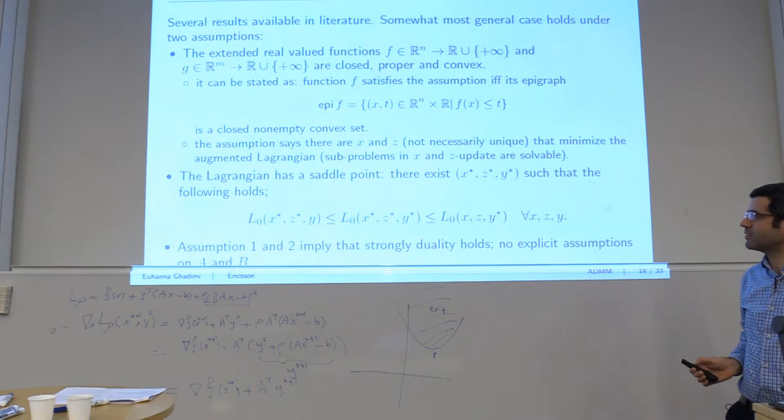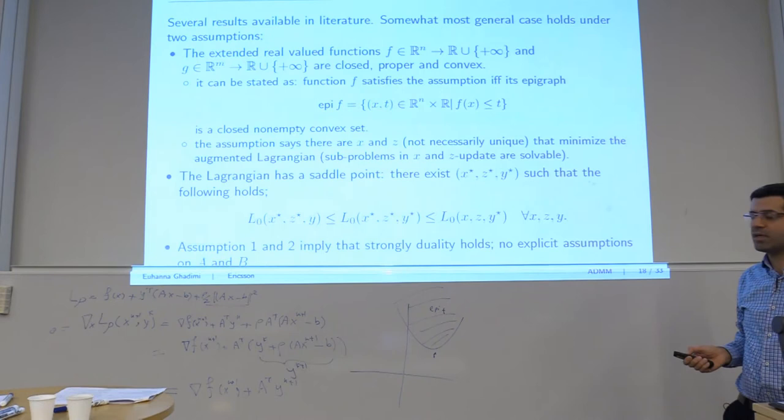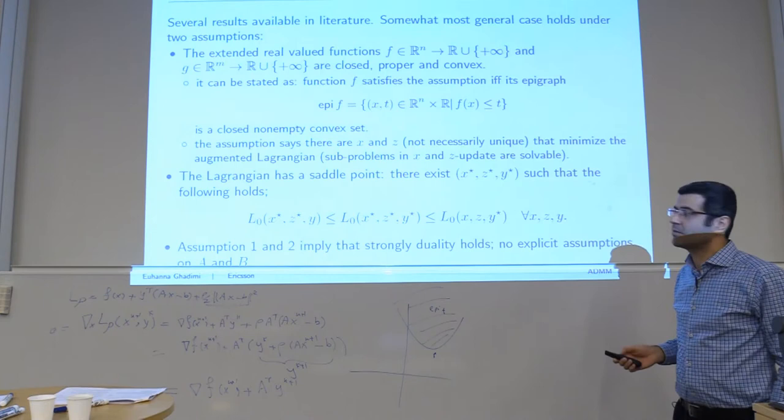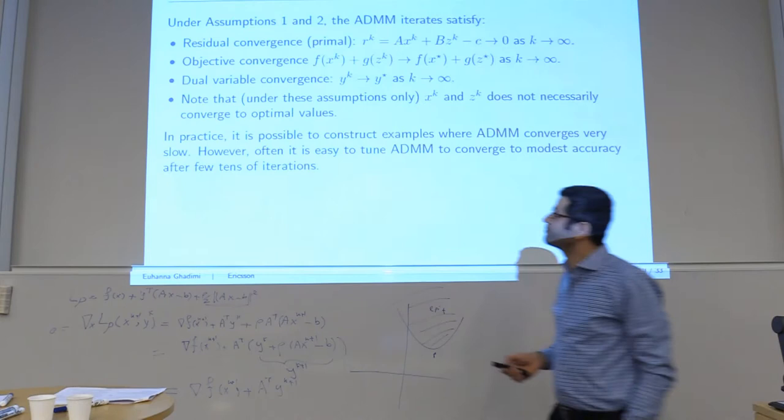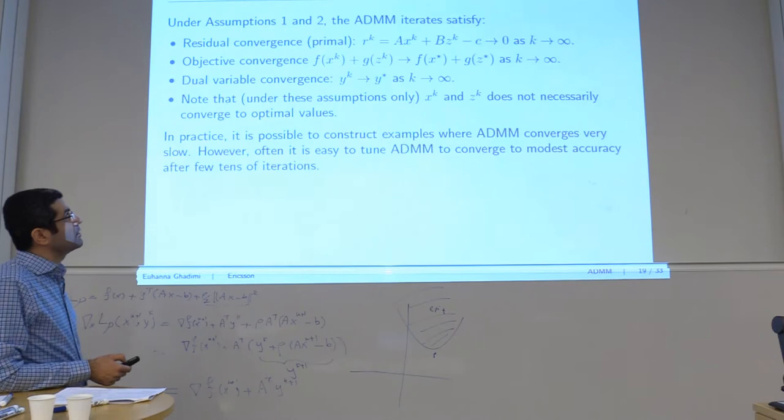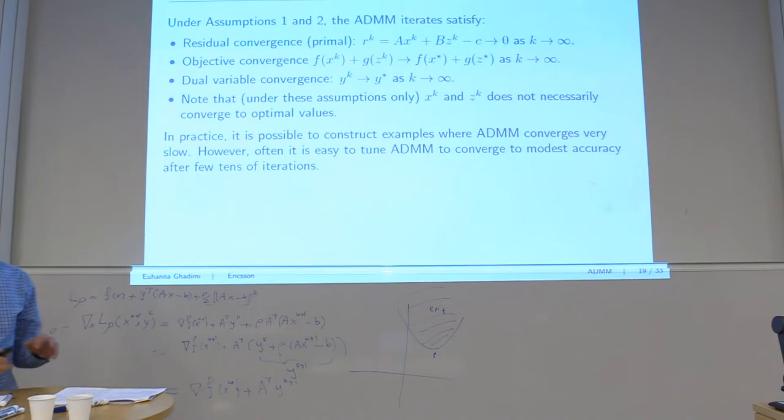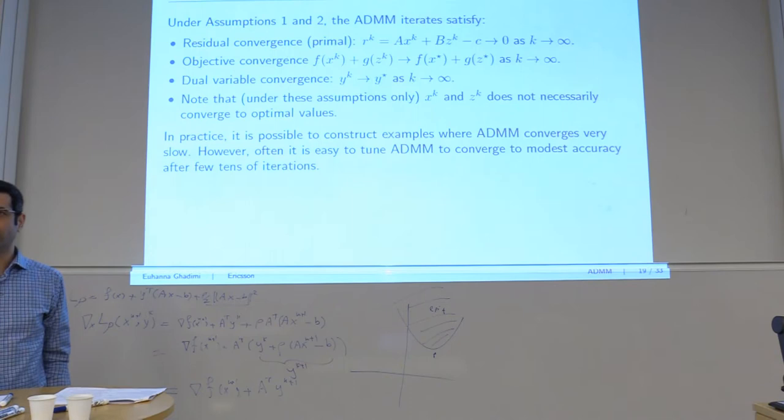And the second assumption is that there is a saddle point exists. Basically, what it means is that your problem has a solution. By definition, the set of solutions is not empty. And you recognize that these assumptions are not really tight. So, very, very generic. Under these two assumptions, the strong duality holds for ADMM. And in particular, there are no assumptions on A and B. As long as you have solution to the original problem, ADMM can work for this type of problems.